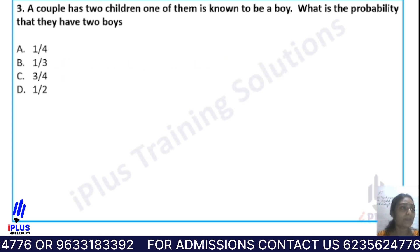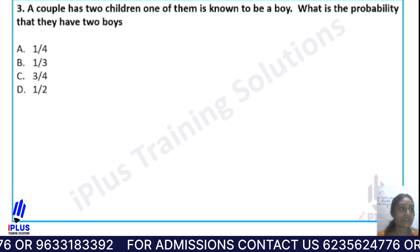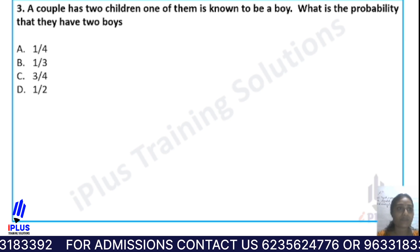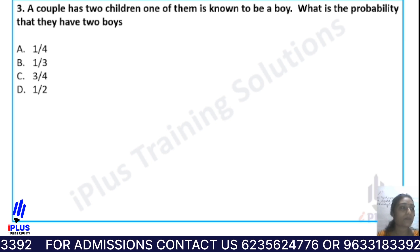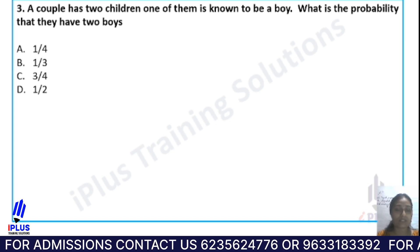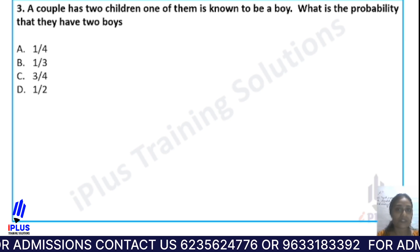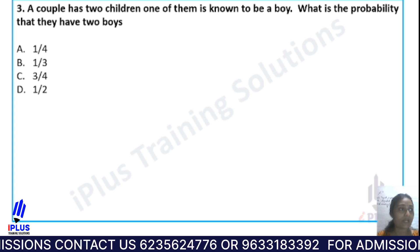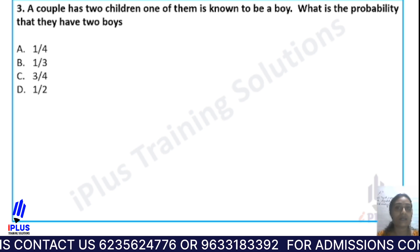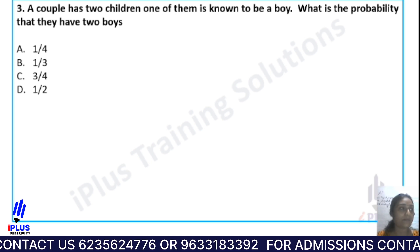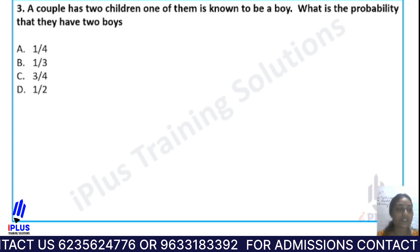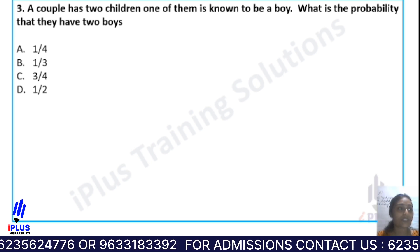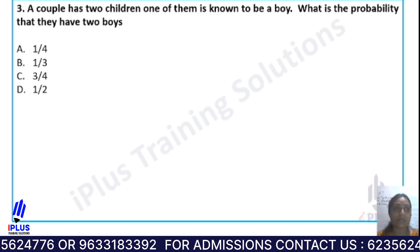Question three: A couple has two children. One of them is known to be a boy. What is the probability that they have two boys? Options are: Option A, one by four; Option B, one by three; Option C, three by four; and Option D, one by two.